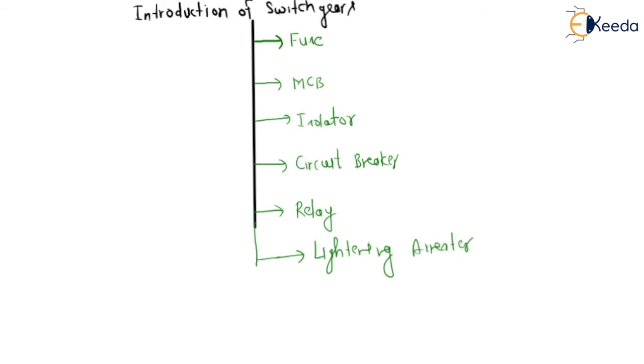These are the switchgear devices: fuse, MCB, isolator, circuit breaker, relay, and lightning arrester. Now among these types, we have to study only these two: circuit breaker and relay.